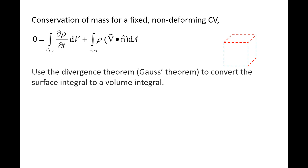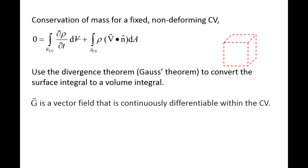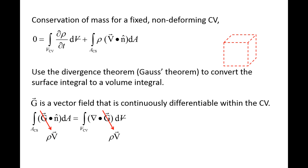We will convert this surface integral to a volume integral using the divergence theorem, which is also commonly called Gauss's theorem. The divergence theorem states that if g is a vector field that is continuously differentiable within a region of space, such as this control volume, then the following relationship holds: the dot product of g and normal vector n times dA, integrated over the entire control surface, is equal to the divergence of g times dV, integrated over the entire control volume.